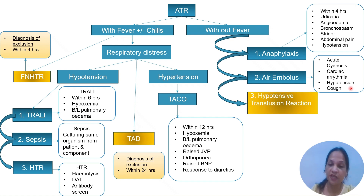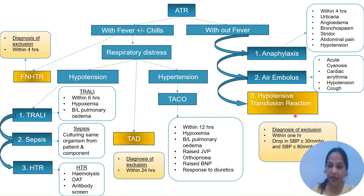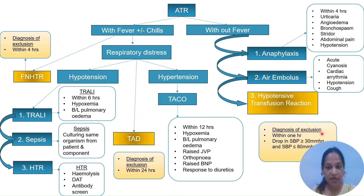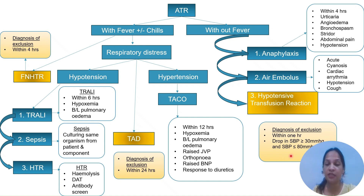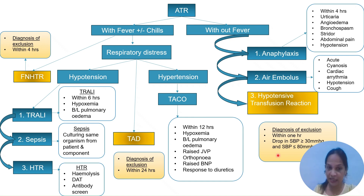Another transfusion reaction without fever is hypotensive transfusion reaction, which is also a diagnosis of exclusion. The signs occur within one hour, with systolic BP dropping by more than 30 mmHg and the absolute systolic BP falling to less than 80 mmHg. This completes our symptom-based approach to diagnosing all nine possibilities of acute transfusion reactions.